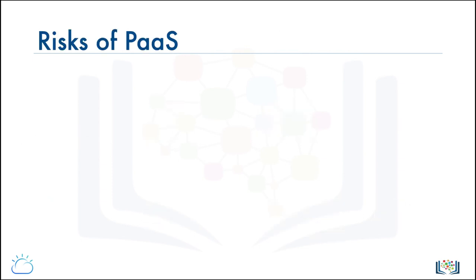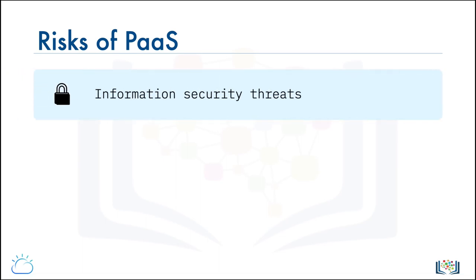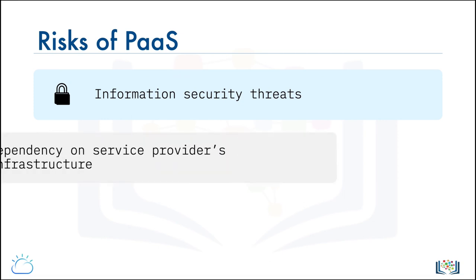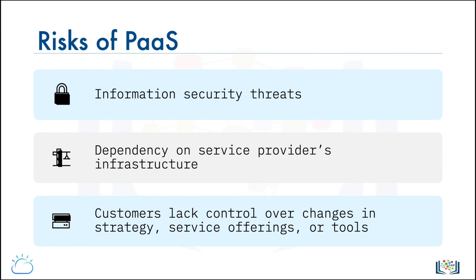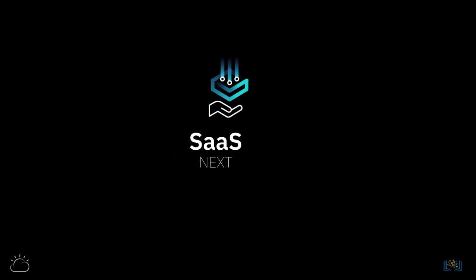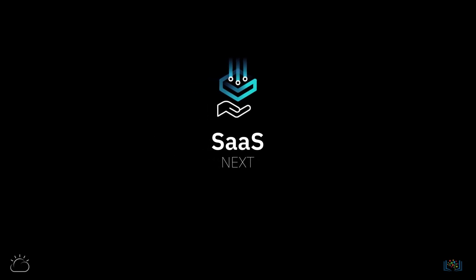PaaS clouds do come with some risks — risks that all cloud offerings have in general, such as information security threats and dependency on the service provider's infrastructure. Services can get impacted when a provider's infrastructure experiences downtime. Customers also don't have any direct control over changes that may take place when a provider makes changes in its strategy, service offerings, or tools. But the benefits can far outweigh these risks. PaaS continues to experience strong growth and is predicted to become the prevailing platform delivery model moving forward. In the next video, we will look at the software as a service model, all its features, benefits, and some use cases.